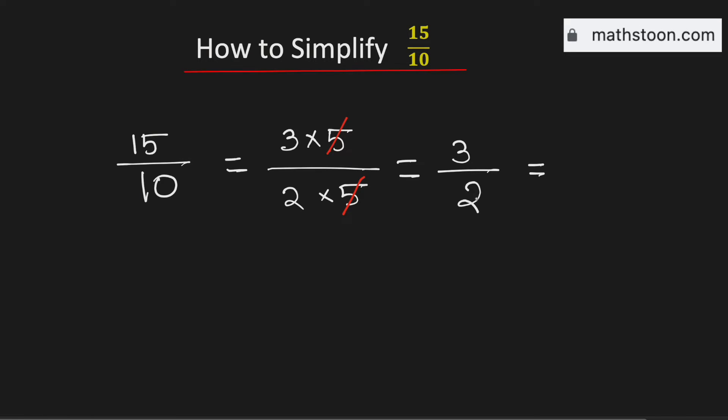See that 2 goes into 3 one time with 1 left over, and we need to divide it by 2. Therefore, 15 over 10 as a mixed number is equal to 1 and 1 half.